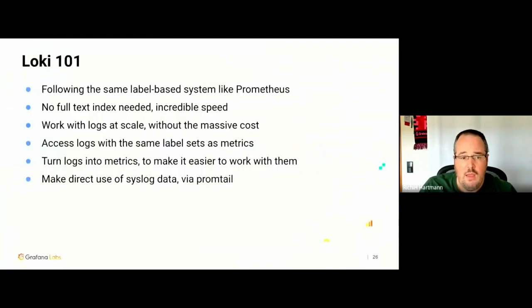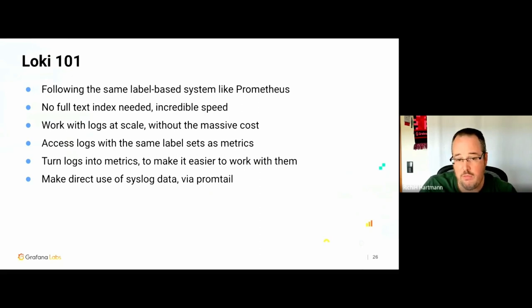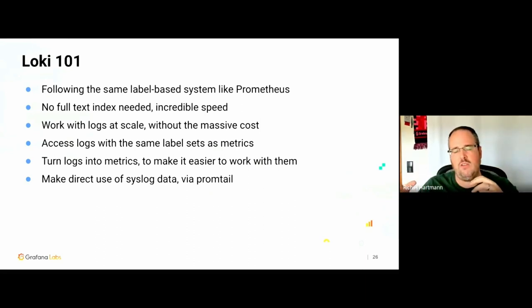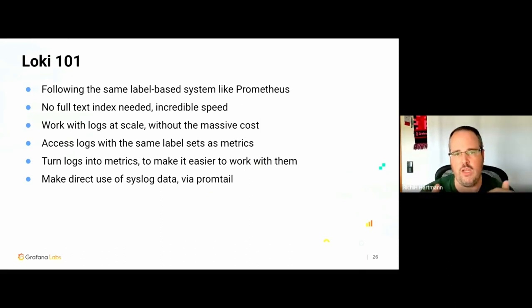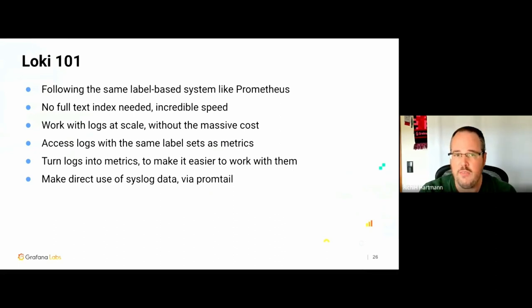Grafana Loki is based on the same label sets as Prometheus. It does not have a full-text index, which is part of why it's so quick. It handles quite the scale of logs — we're looking at high numbers of terabytes with surprisingly little cost. Because you have the same labels on your logs and your metrics, you can seamlessly jump between those two. You can tie a news article or stock event directly to how the stock develops. The metadata and access mechanisms are literally the same — and that means you can trivially turn your events into metrics and do deeper analysis on the already pre-contextualized data.